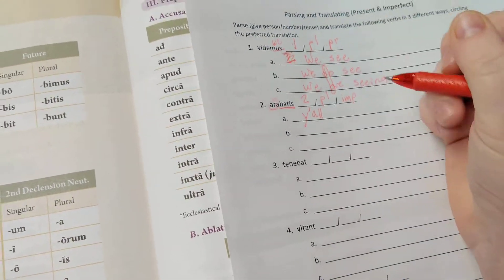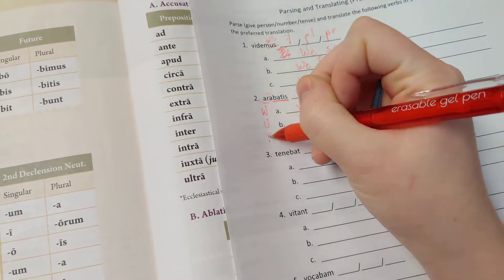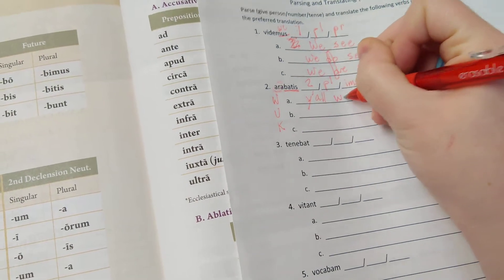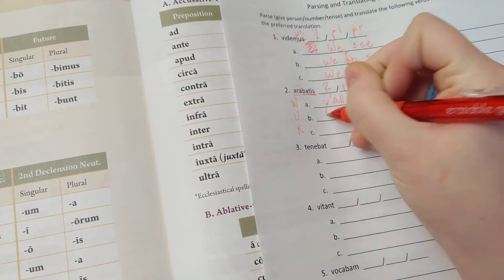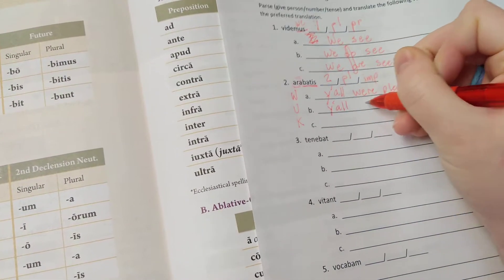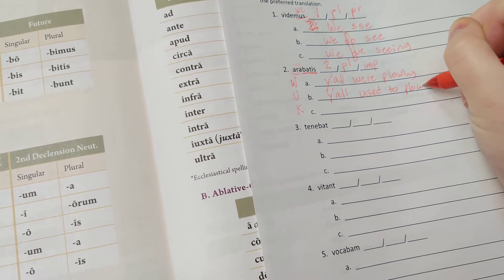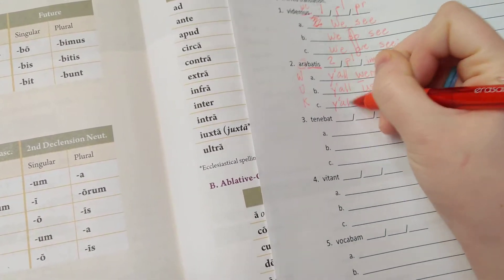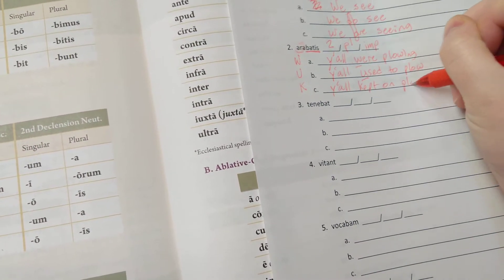Now in imperfect tense, the three ways to translate it, we use the abbreviation WAK, which again is a horrible acronym. But y'all were plowing, y'all used to plow, or y'all kept on plowing.